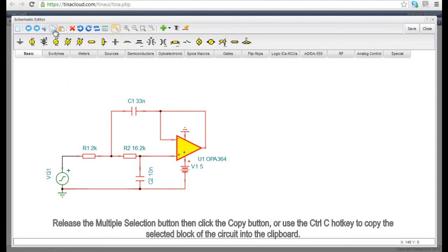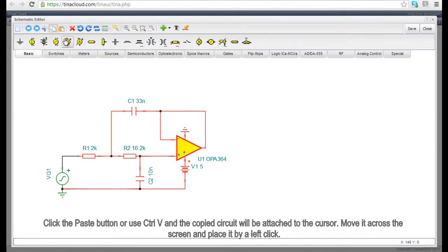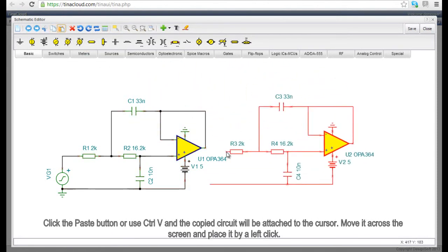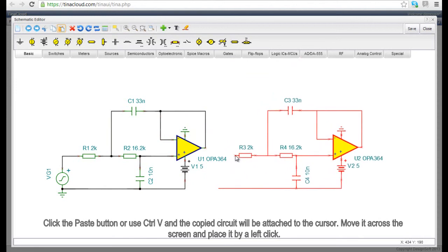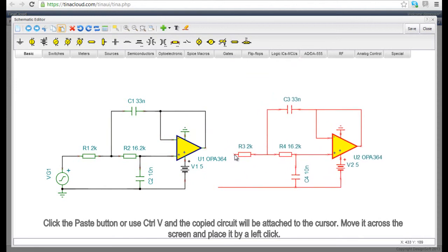Release the multiple selection button, then click the copy button or use Ctrl C to copy the selected block of the circuit into the clipboard. Click the paste button or use Ctrl V and the copied circuit will be attached to the cursor. Move it across the screen and place it with a left click.